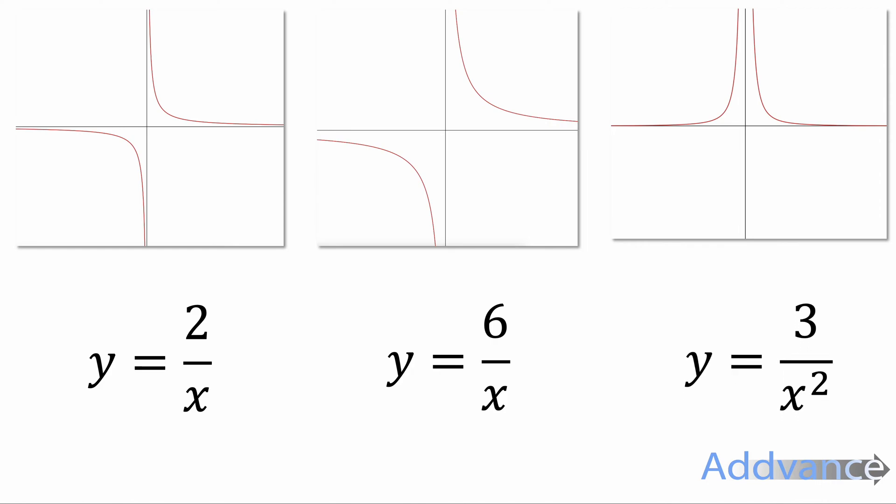The first one on the left will be y equals 2 over x or something like that. The one in the middle will be y equals 6 over x. Those first two are pretty much the same graph. One is just slightly bigger or slightly stretched because there's a bigger number in the numerator.